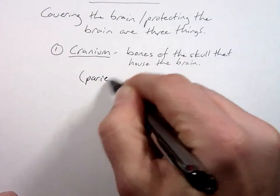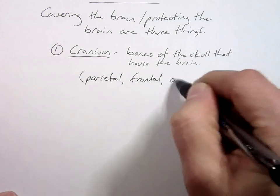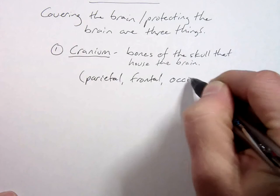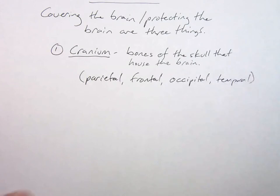Parietal, frontal, occipital, temporal. And we'll stop with those because those all actually have lobes of the brain named after them, so that's really convenient.